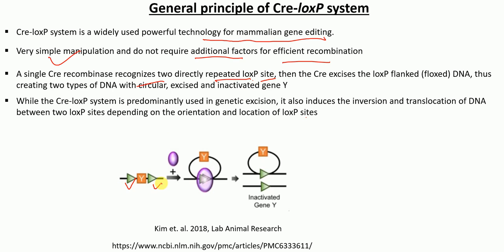Here is one LoxP site and here is another LoxP site — they are directly repeated and present on the same strand. The Cre enzyme excises the LoxP-flanked DNA, meaning the sequence present between the LoxP sites. This creates two types of DNA: a circular excised form and a linearized form. Gene Y, shown here between two LoxP sites, is excised as circular DNA, thereby leading to its inactivation.